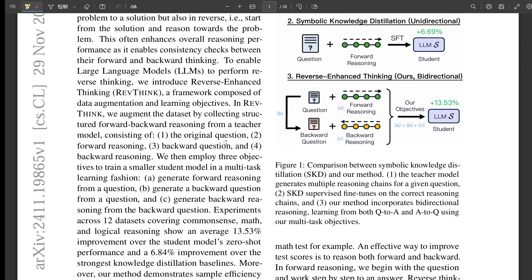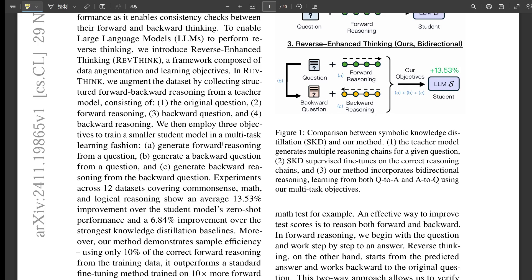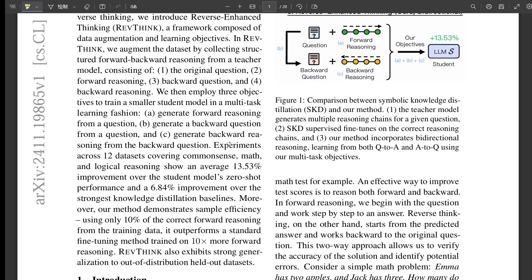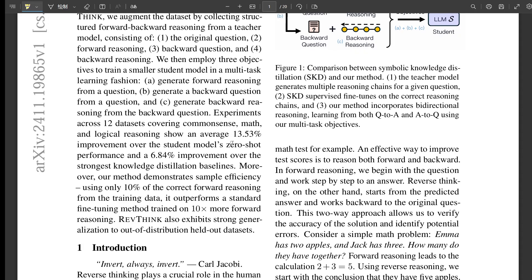You might be wondering how do you even teach an AI to think backward? It's not like you can just tell it to think backward now. AI training is already super complicated. You have to give them tons of data and then fine-tune them to do specific things. In this case, the researchers came up with this approach they call Rethink.